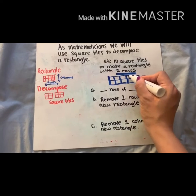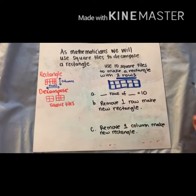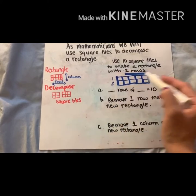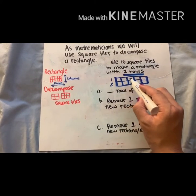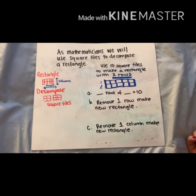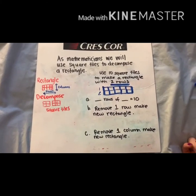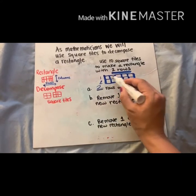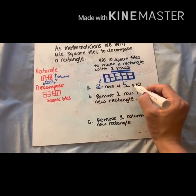Now I've created my rectangle. I have two rows, one row, two rows. I have one, two, three, four, five, six, seven, eight, nine, ten. So I have the amount that I need. So that means I have two rows of five, which gives me ten.